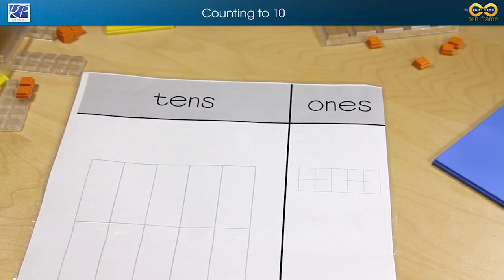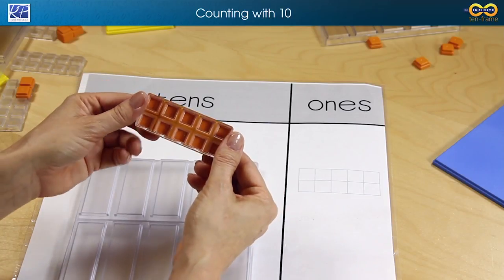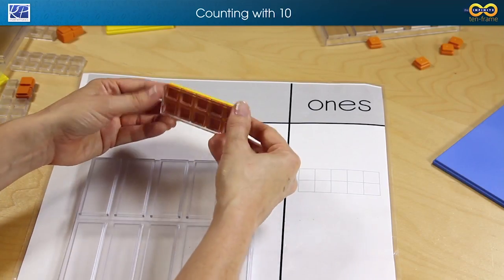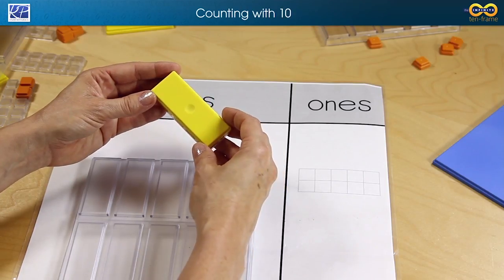Next let's take a look at counting with 10s. Once the students have worked with counting to 10 they can use groups of 10. Once again there's 10 ones that compose one 10 and they can use these tiles to count to 100.